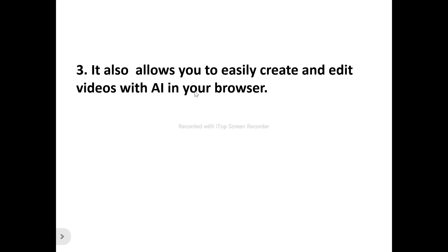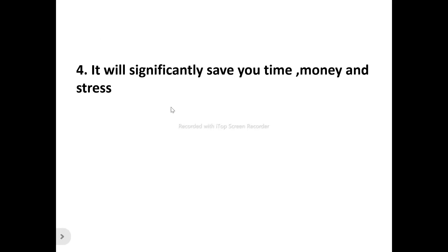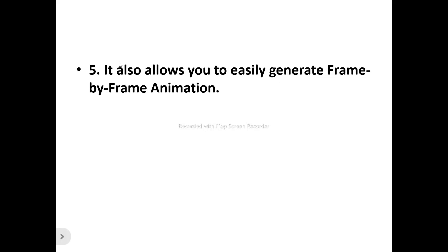Number three, it also allows you to easily create and edit videos with AI in your browser. Neural Frames turns your browser into an AI video editor, so you can create AI animations, movies, videos, and trippy visuals, and edit them with AI. This gives you the ability to edit your videos to suit your style and fit your brand. Number four, it significantly saves time, money, and stress — the time and money involved in employing a graphic designer or content creator to create stunning animations for your marketing needs or music videos.